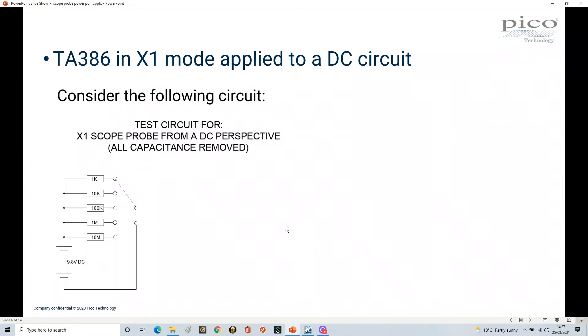Here we have a circuit for testing the DC transfer characteristics of our probe. I've got a power supply here which is 9.8 volts. The reason for choosing 9.8 will become apparent in a minute—it seems a bit of a strange number, but there was a reason behind it. We have a series of resistors: 1K, 10K, 100K, 1 meg, and 10 megs. We're going to have some test equipment here in a minute.